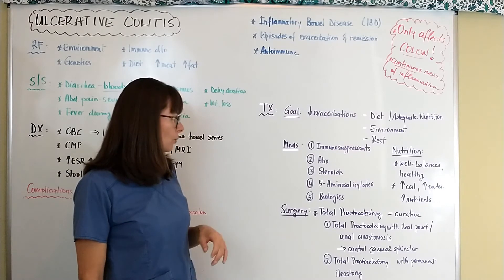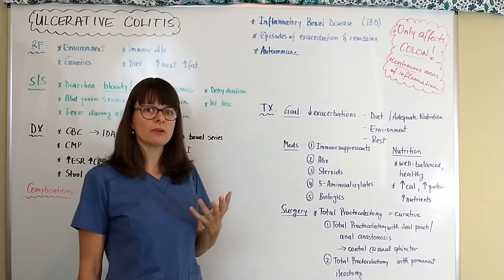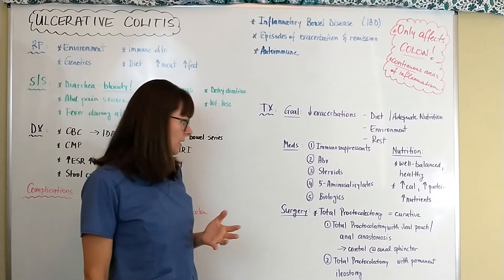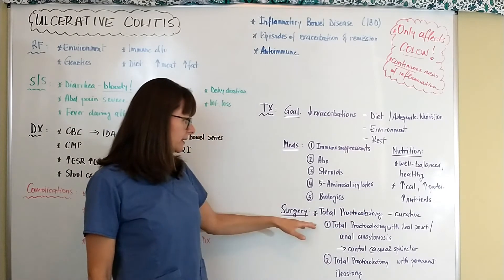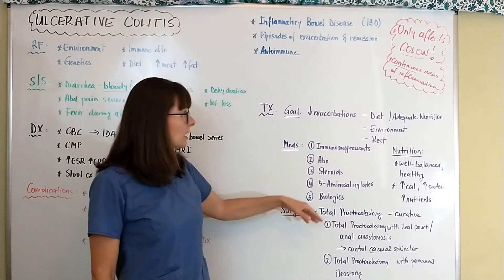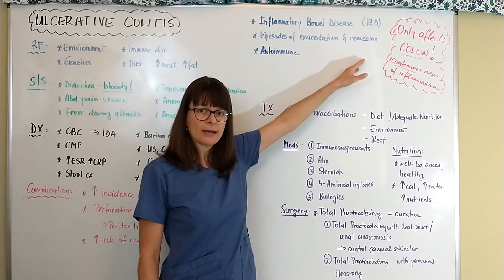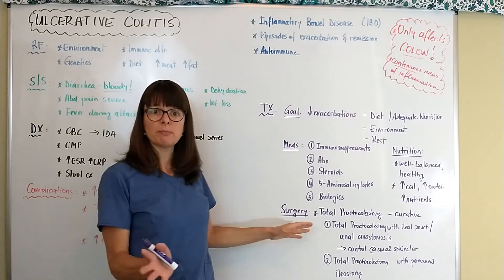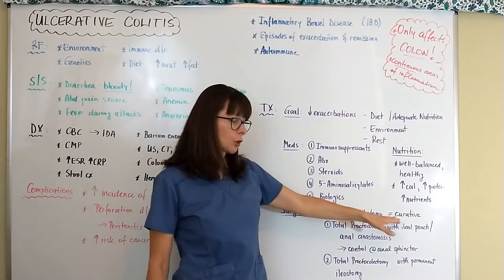Sometimes when exacerbation episodes get so severe that the colon is really inflamed and there is a lot of damage, a total proctocolectomy can be done — that is the removal of the rectum and the colon. Because ulcerative colitis is only localized in the colon, removing the rectum and colon essentially removes the disease, so total proctocolectomy is curative.